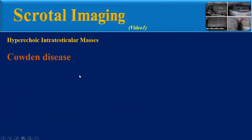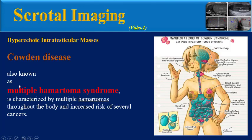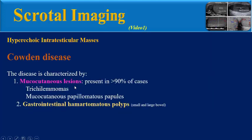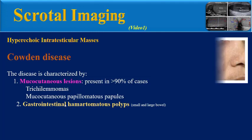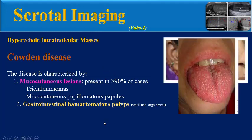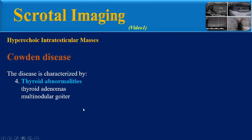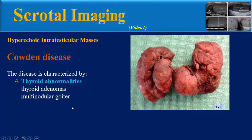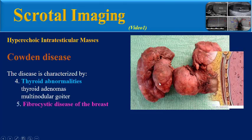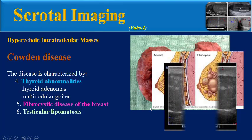This is a good opportunity for a brief overview of Cowden disease. Cowden disease, also known as multiple hamartoma syndrome, is characterized by multiple hamartomas throughout the body and increased risk of certain cancers. The disease features mucocutaneous lesions in more than 90% of cases, including trichilemmomas, mucocutaneous papillomatous papules, gastrointestinal hamartomas, polyps, glycogenic acanthosis, thyroid abnormalities including thyroid adenoma and multinodular goiter, fibrocystic disease of the breast, and testicular lipomatosis.